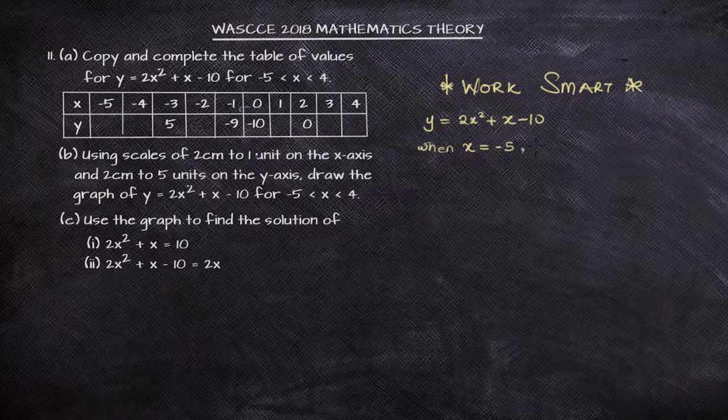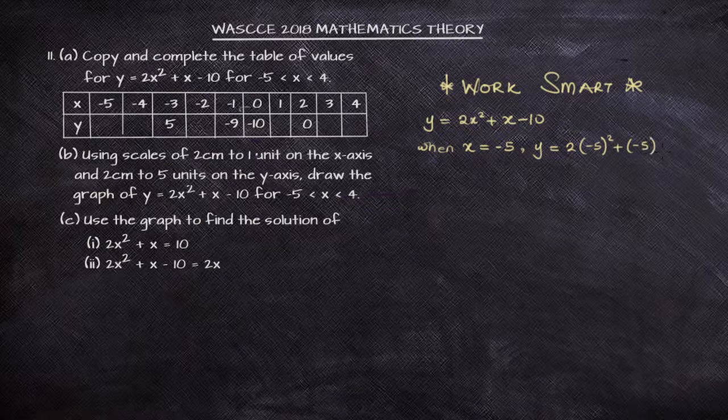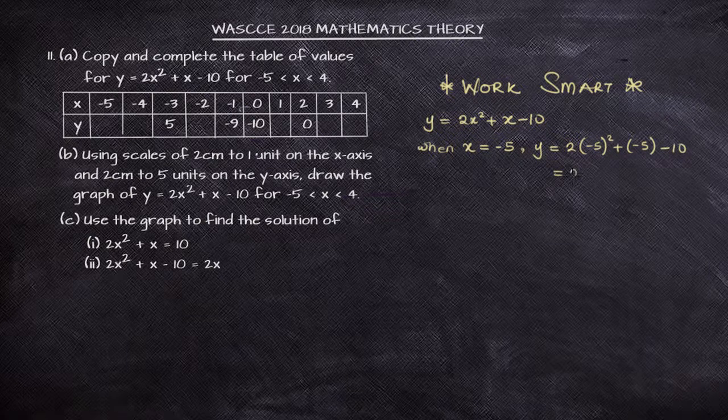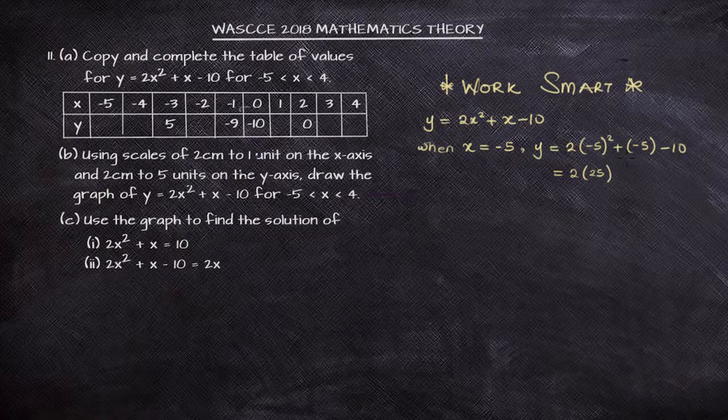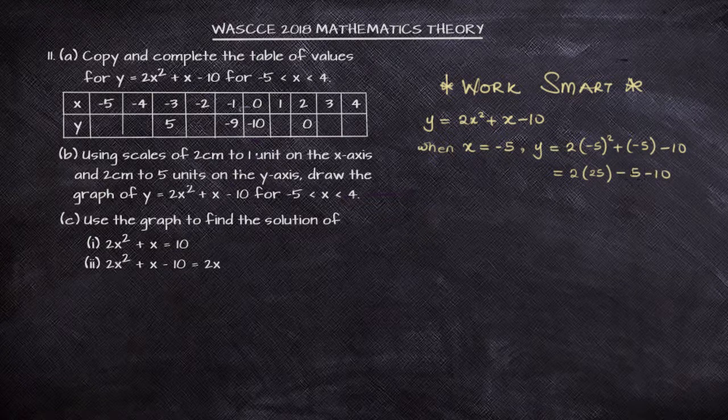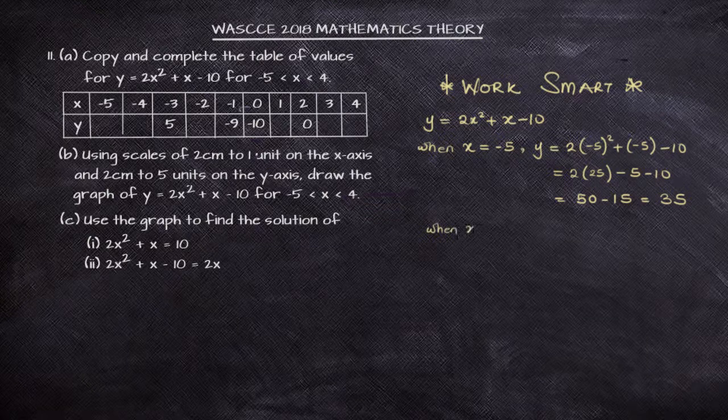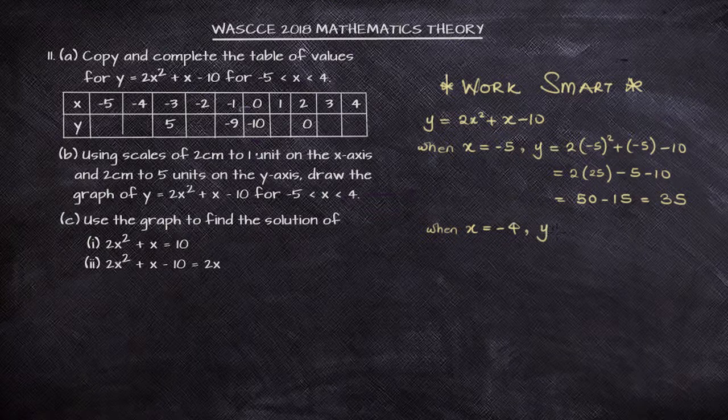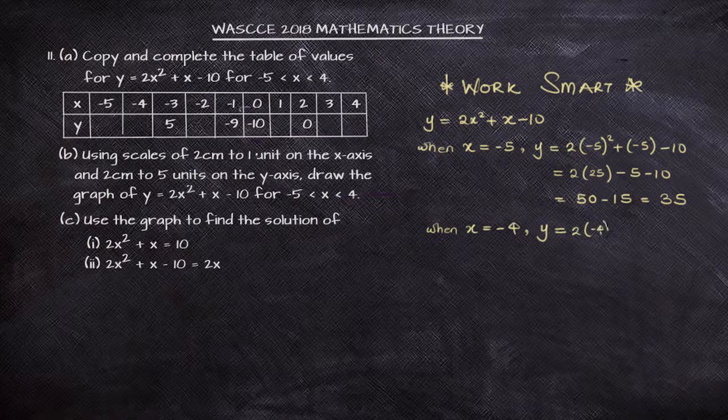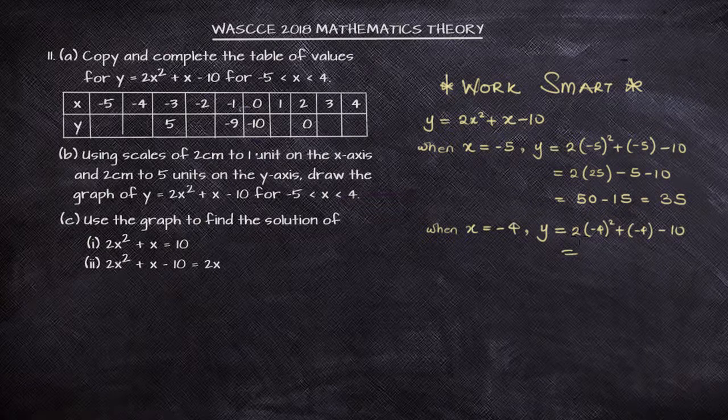Like when x is minus 5, then y will be 2 into minus 5 squared plus minus 5 minus 10, and then you want to expand that bracket. And after expanding the bracket, you also go on to the next value, then take it 6. The tendency for this is that you get bored easily, and you lose concentration, and you miss it.